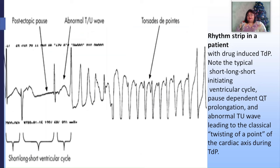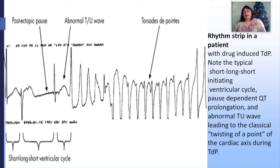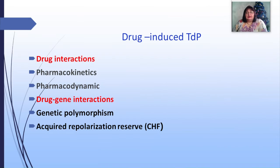A telemetry strip from a patient with drug-induced TdP shows the typical short-long-initiated ventricular cycle, pause-dependent QT prolongation, and abnormal TU wave leading to the classical twisting of the cardiac axis during TdP. Drug-induced TdP can be caused by drug interactions: pharmacokinetic-pharmacodynamic, drug-gene interaction, genetic polymorphism, and reduced repolarization reserve.